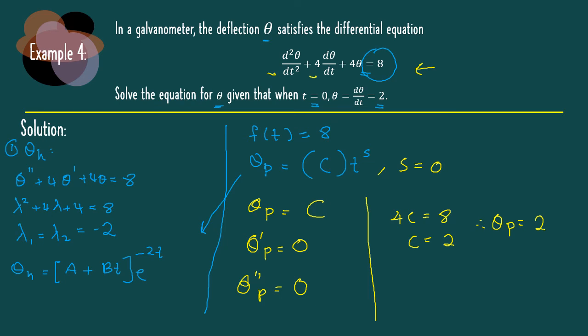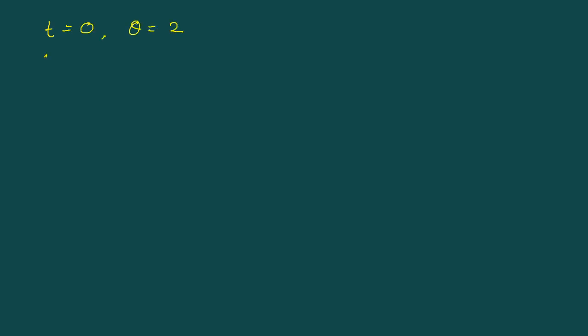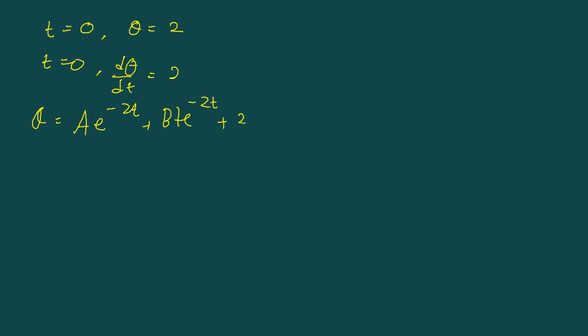Lastly, combine theta h plus theta p. So theta equals a exponent minus 2t plus bt exponent minus 2t plus 2. This is our general solution. But the question asks for the particular solution, meaning we need to find the values of a and b using the initial conditions. Let's substitute the first initial condition: when t equal to 0, theta equal to 2.